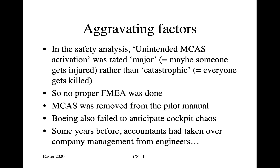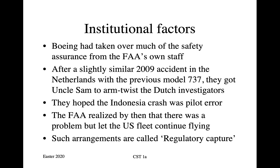There was also an institutional factor in that about 10 years previously, Boeing had moved its headquarters from Seattle — where it had been since Bill Boeing founded the company about 100 years ago — to Chicago. This coincided with company management being taken over by accountants and bankers, whereas previously it had been an engineer-heavy company where top management were always engineers, and often engineers who had also been pilots. This led to a change in culture, which was exacerbated by other institutional factors.